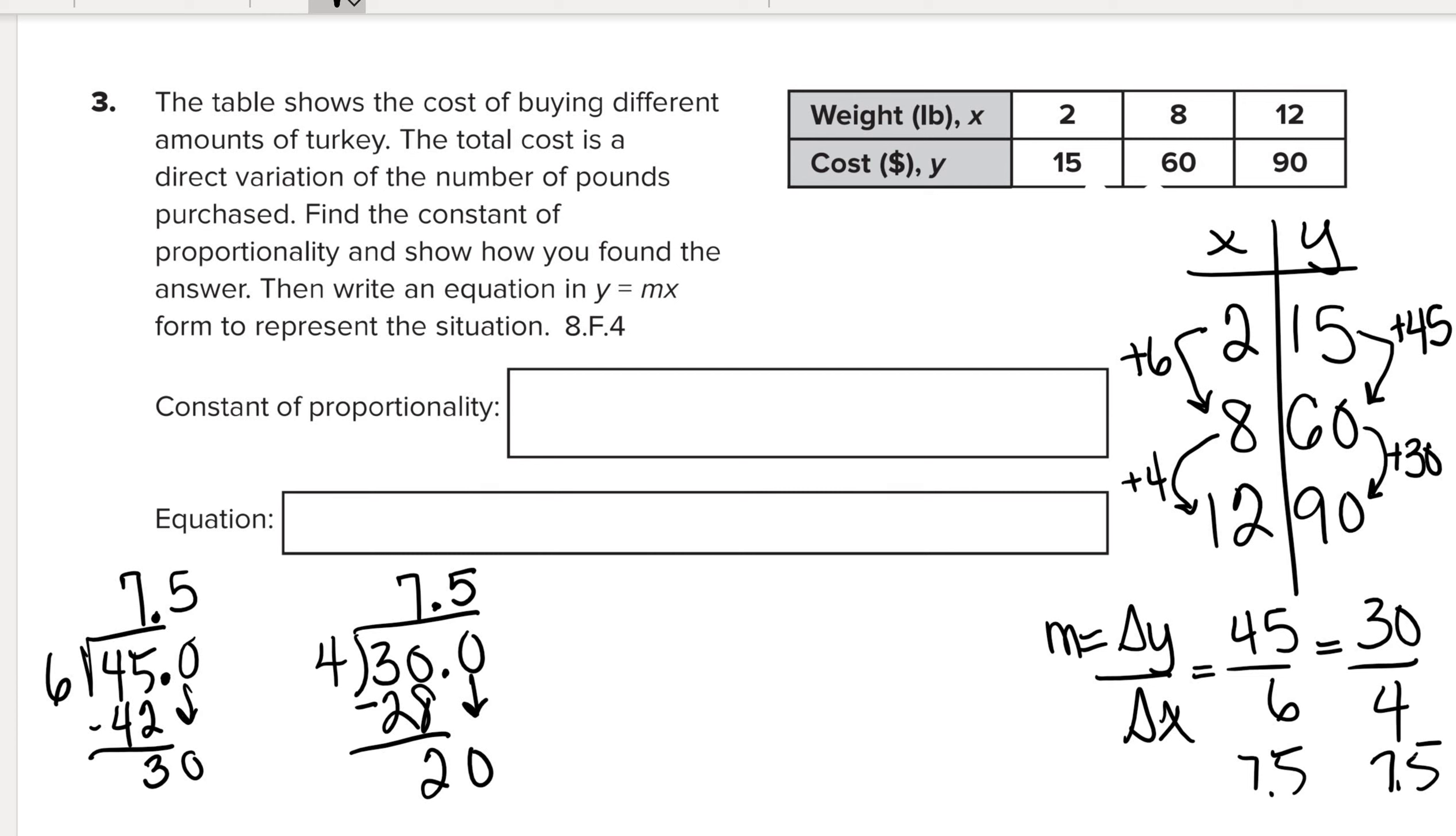So the constant of proportionality, 46 divided by 6, which equals 30 divided by 4, which actually equals 7.5, which is what we came up with for both of them.